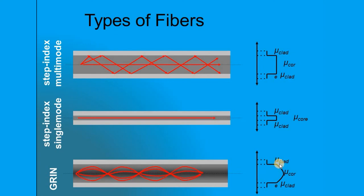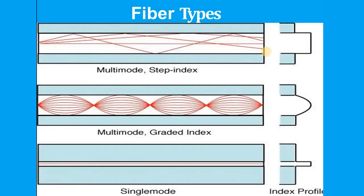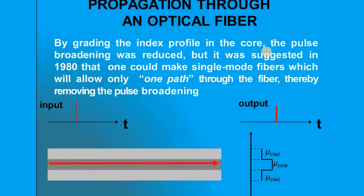Looking at the figures: if the variation of refractive index is curved, it is graded index; if the variation is a step discontinuity, it is step index. These figures show the differences between single mode, multi-mode, step index, and graded index — which is what we have discussed in the previous slides.